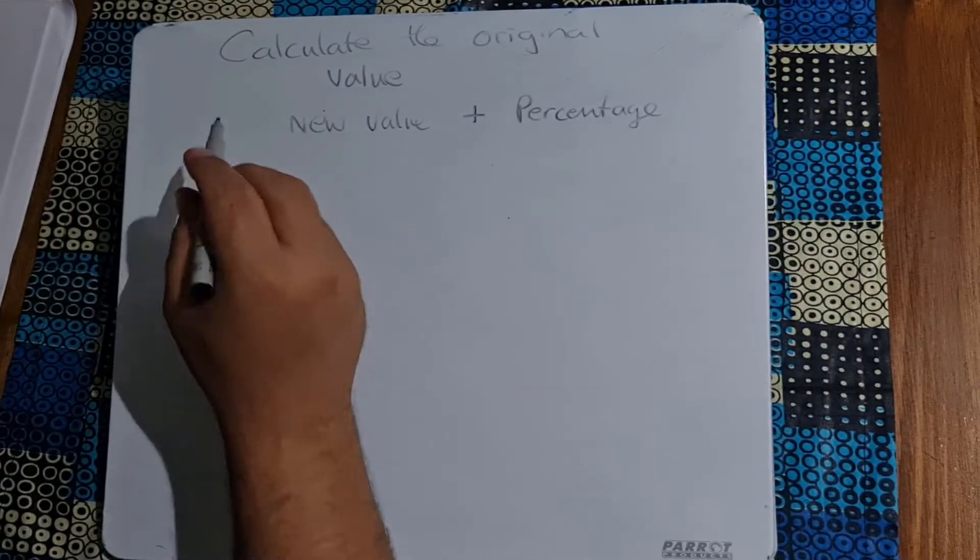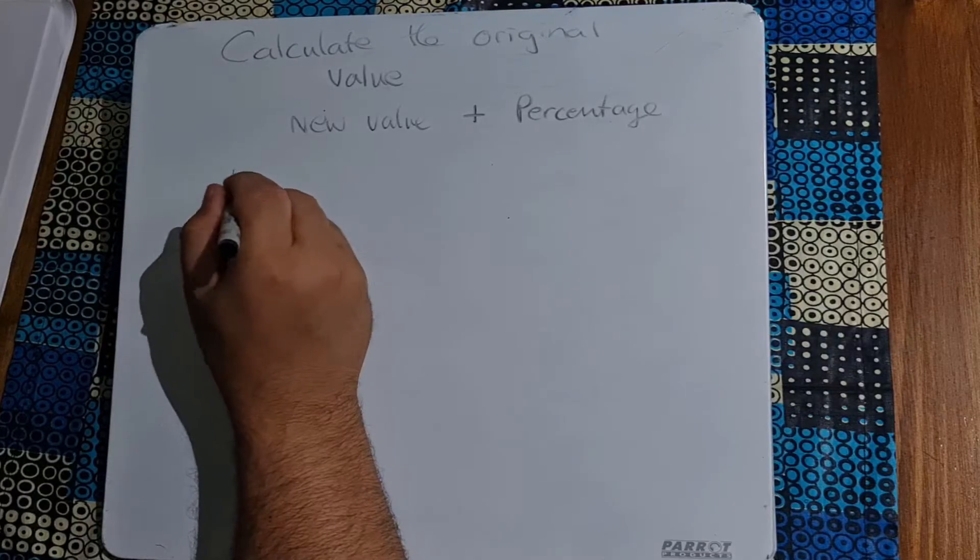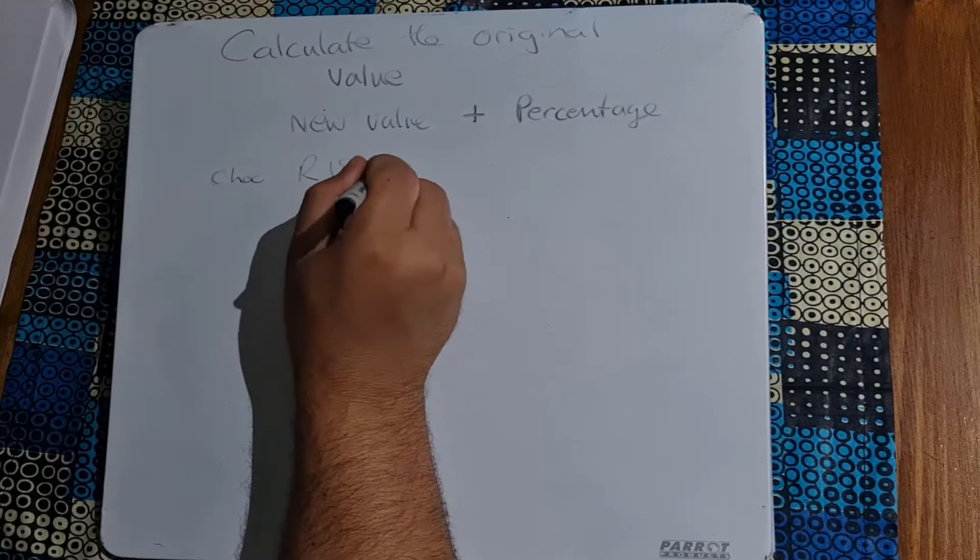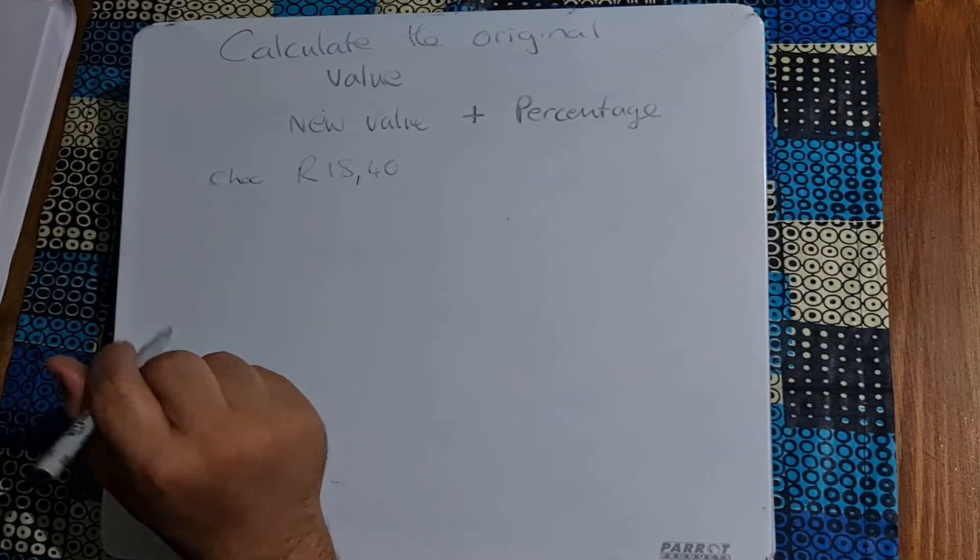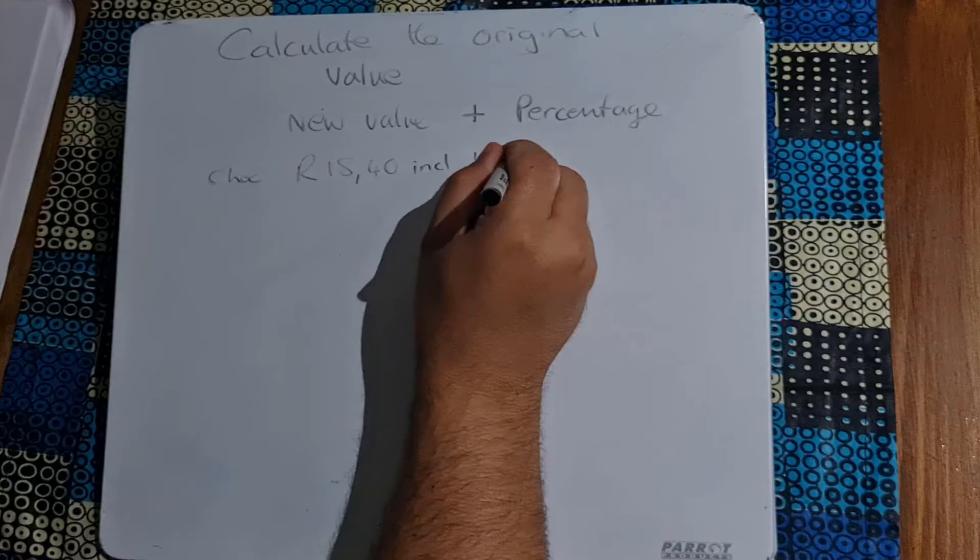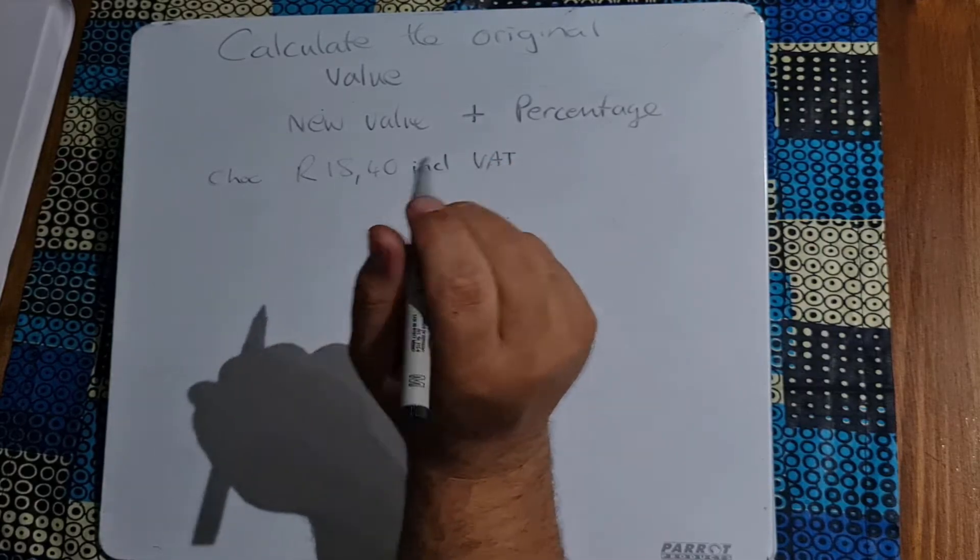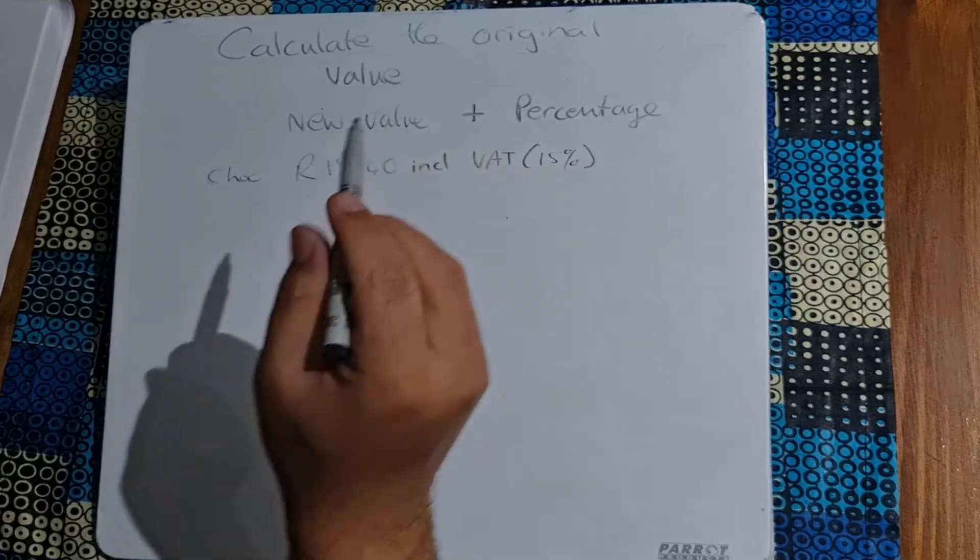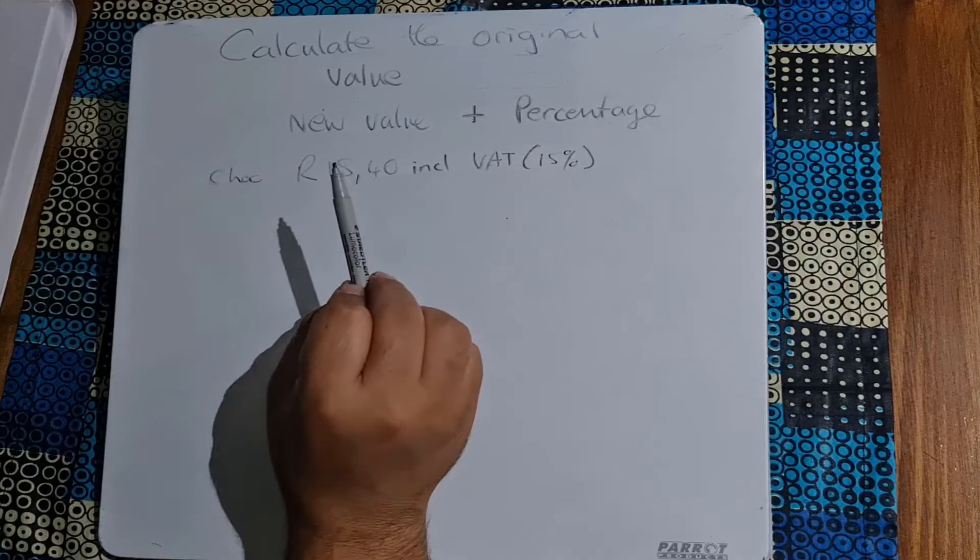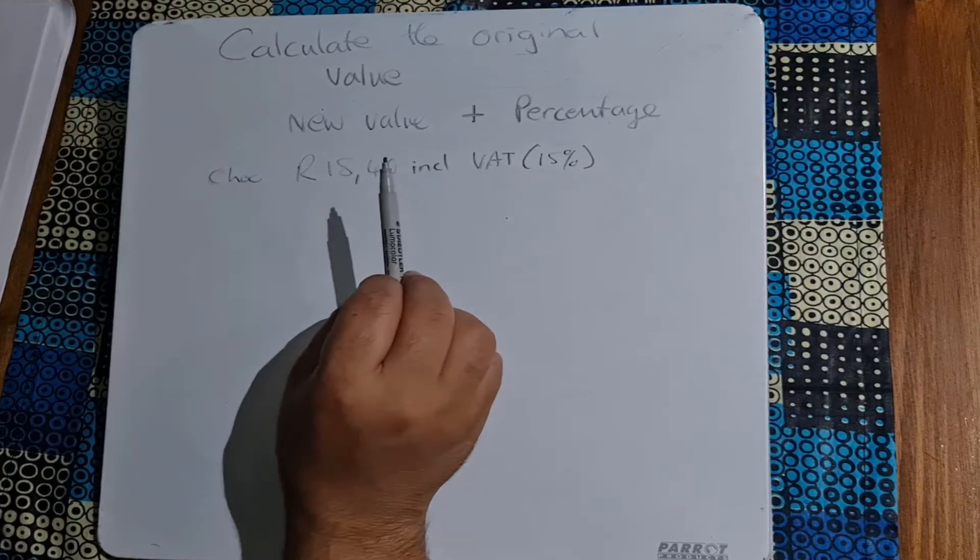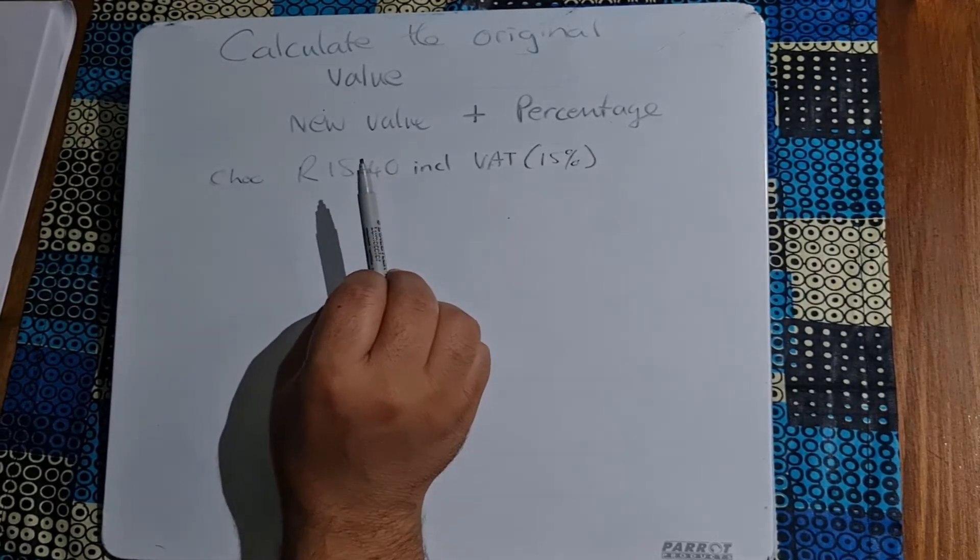Let's take the example of a slab of chocolate. This chocolate is going to cost us R18.40 and that is including VAT. They're telling us that VAT is 15%, so now they're saying if this is the price of the chocolate including VAT, what is the price of the chocolate excluding VAT?